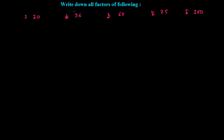Here's the question: write down all the factors of the following numbers — 20, 36, 60, 75, and 100. We have already discussed in the previous class what factors are and when we can say a number is a factor of something, or what are the factors of a given number.